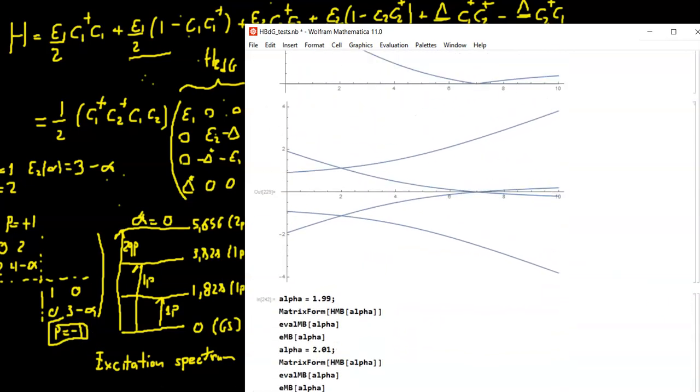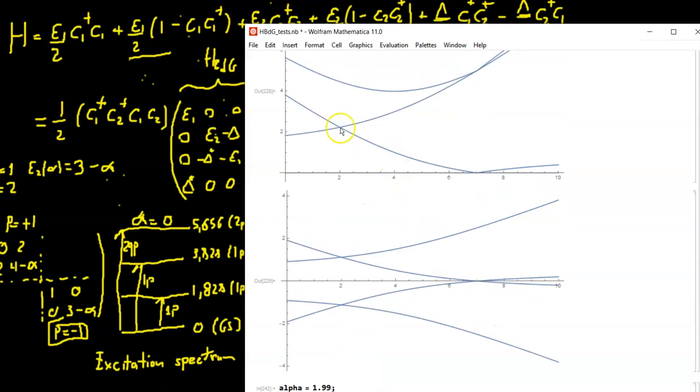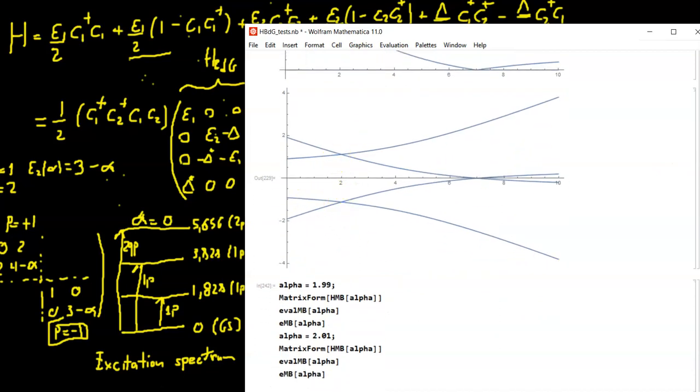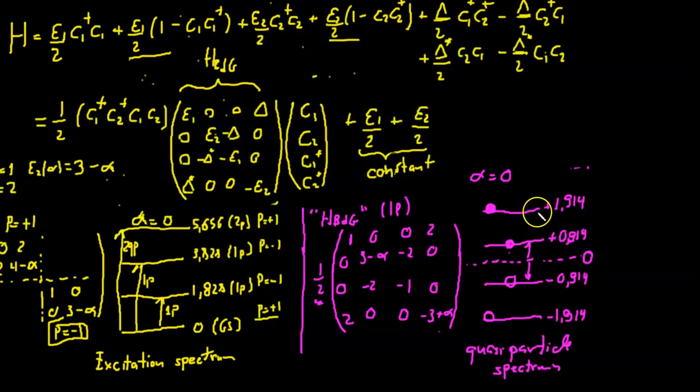If I look at the Bogoliubov-de-Gennes spectrum, it's always symmetric. And here I get a crossing in the excited states. And the one single particle states here is like if these two states here are crossing. And of course, there's going to be a mirror crossing for negative energies. But still, the excitation spectrum doesn't change much. Actually, I have only this one becoming less than that one. But the ground state is still parity 1.